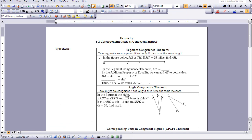I would like to work through this example with you here on number 1. It says in the figure below, MA is congruent to TH. If MT is 25, find AH.